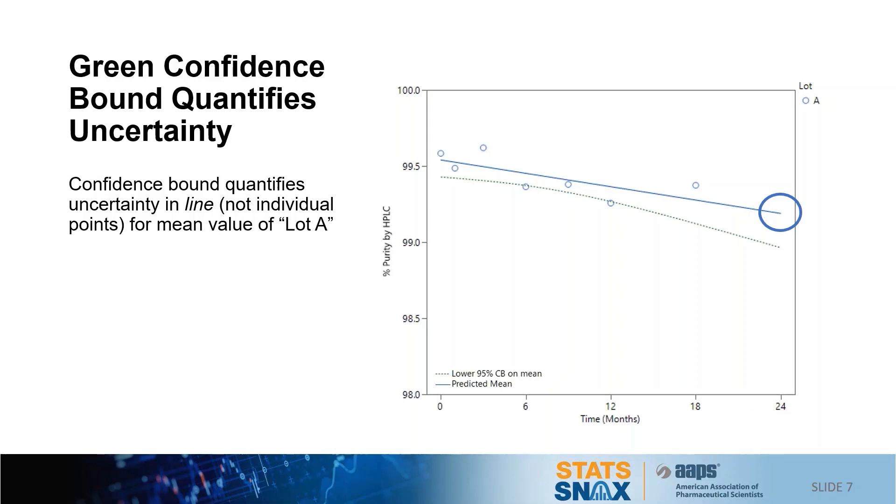Okay, so the regression model is really all the math that is required to support or establish the dating period, again meaning retest or expiry date depending on the product type and manufacturing stage.